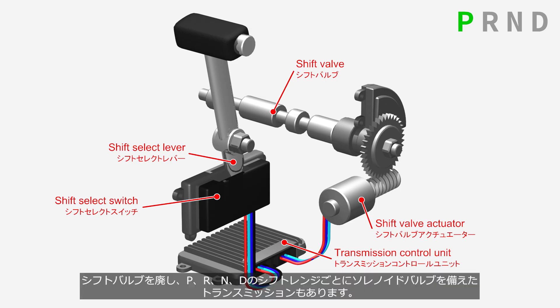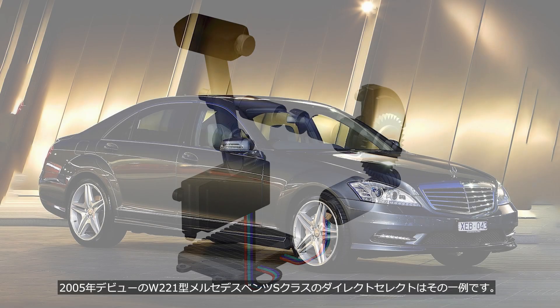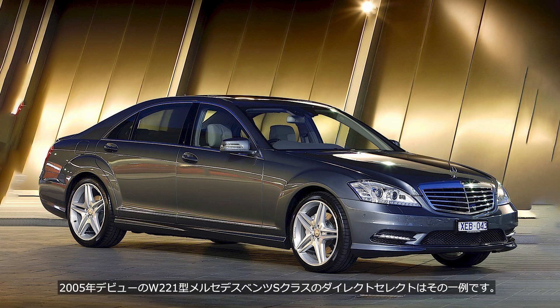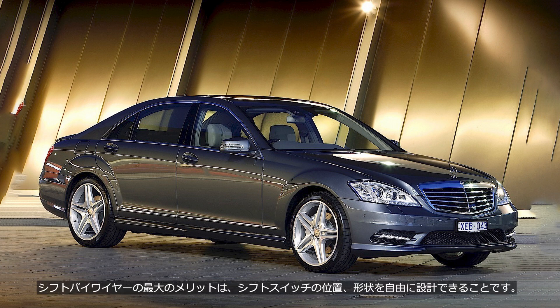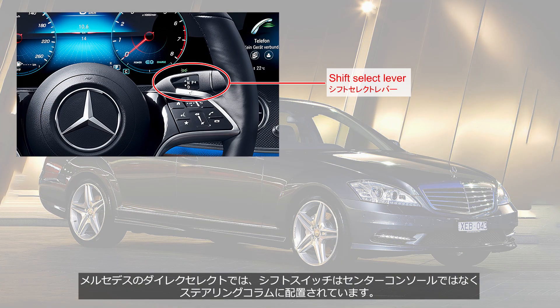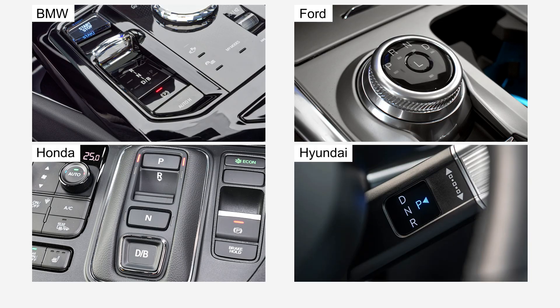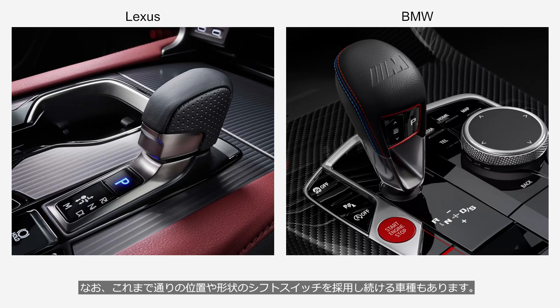In some types of transmissions, the shift valve is eliminated and solenoid valves are provided for each shift range — P, R, N, and D. One early example is the Direct Select system in the W221 Mercedes-Benz S-Class, which debuted in 2005. The greatest advantage of a shift-by-wire system is that the position and shape of the shift switch can be designed freely. In Mercedes' Direct Select system, the shift switch is located on the steering column rather than on the center console, though some models continue to use shift switches in traditional positions and shapes.